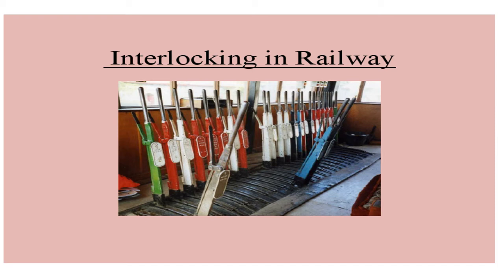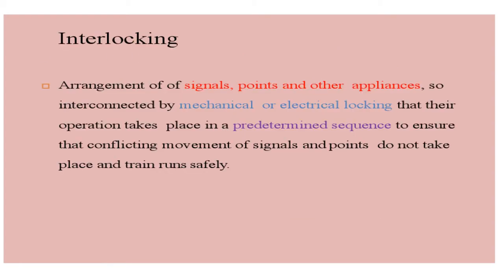This video covers the topic interlocking of signals, its principle, and the methods used from Module 3 of Transportation Engineering 2. Interlocking is the arrangement of signals, points, and other appliances so interconnected by mechanical or electrical locking that their operation takes place in a predetermined sequence to ensure the conflicting movement of signals and points does not take place and trains run safely.